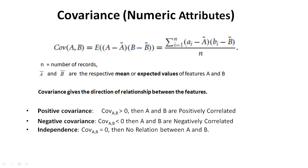So we can say A and B are negatively correlated. Looking at the formula, we can clearly understand that the product of (a_i minus a-bar) and (b_i minus b-bar) decides whether the covariance is positive or negative. Hope you understand the formula for covariance. In our next video, we discuss the Pearson correlation coefficient. Thanks for watching.